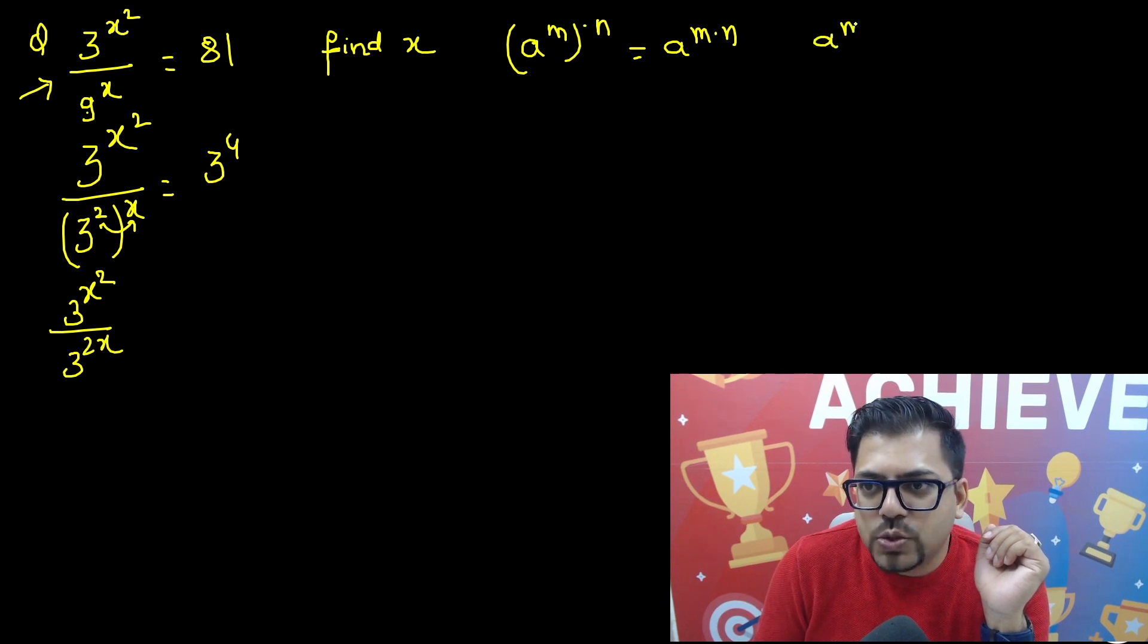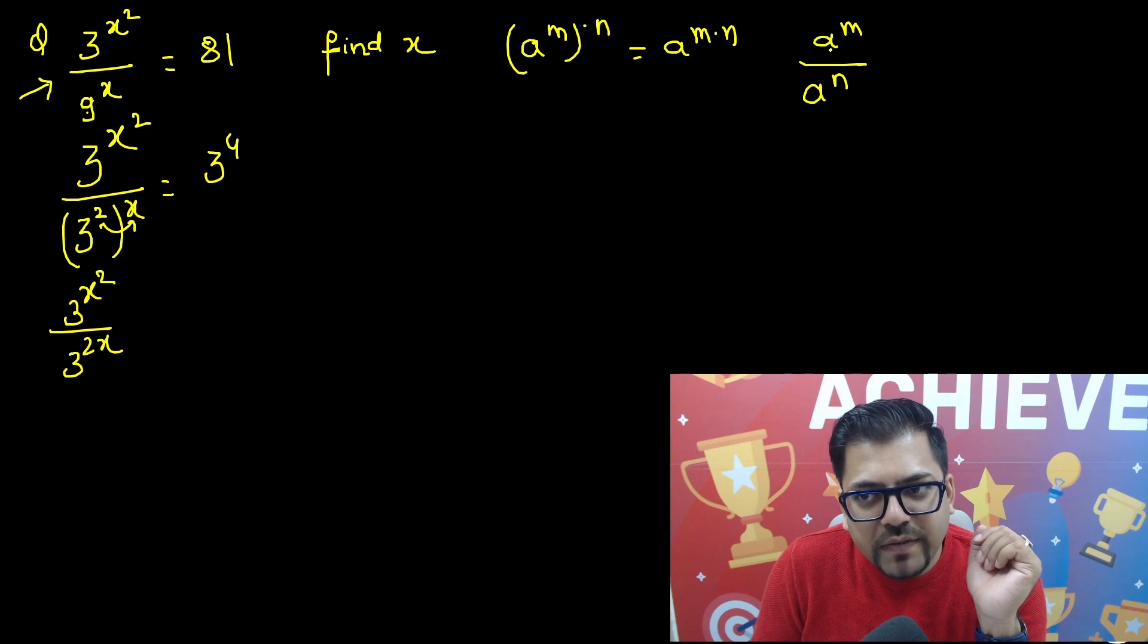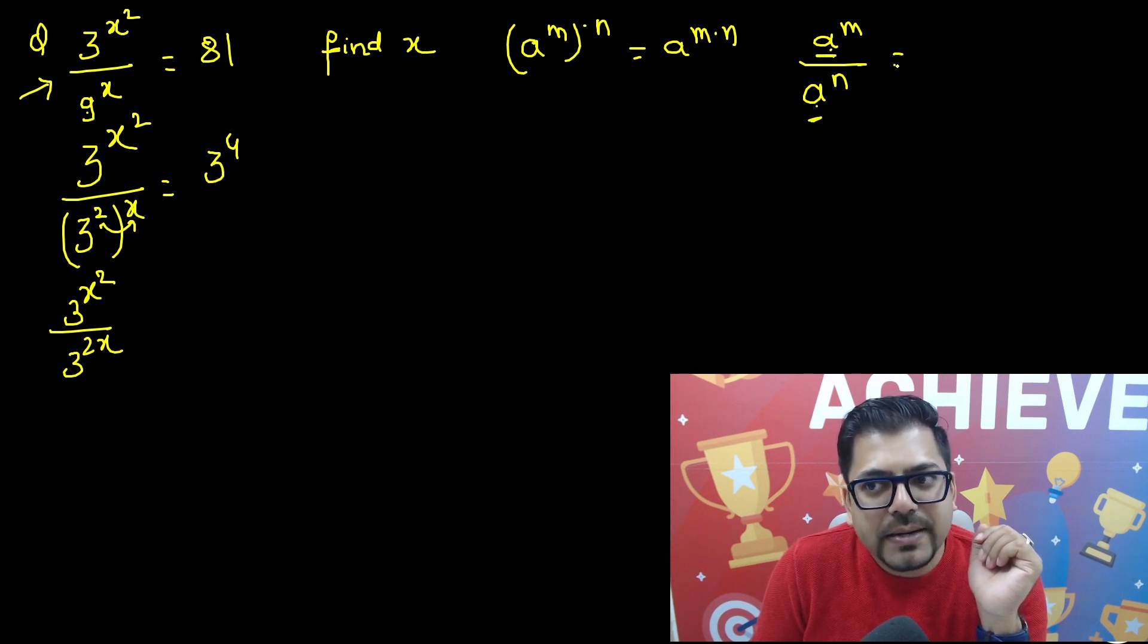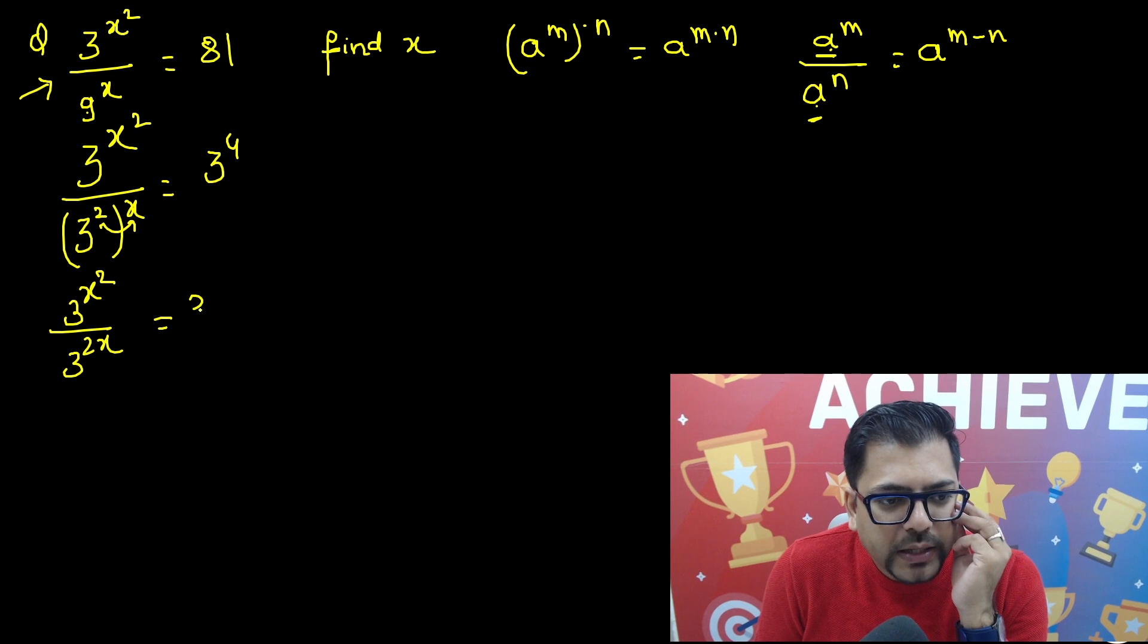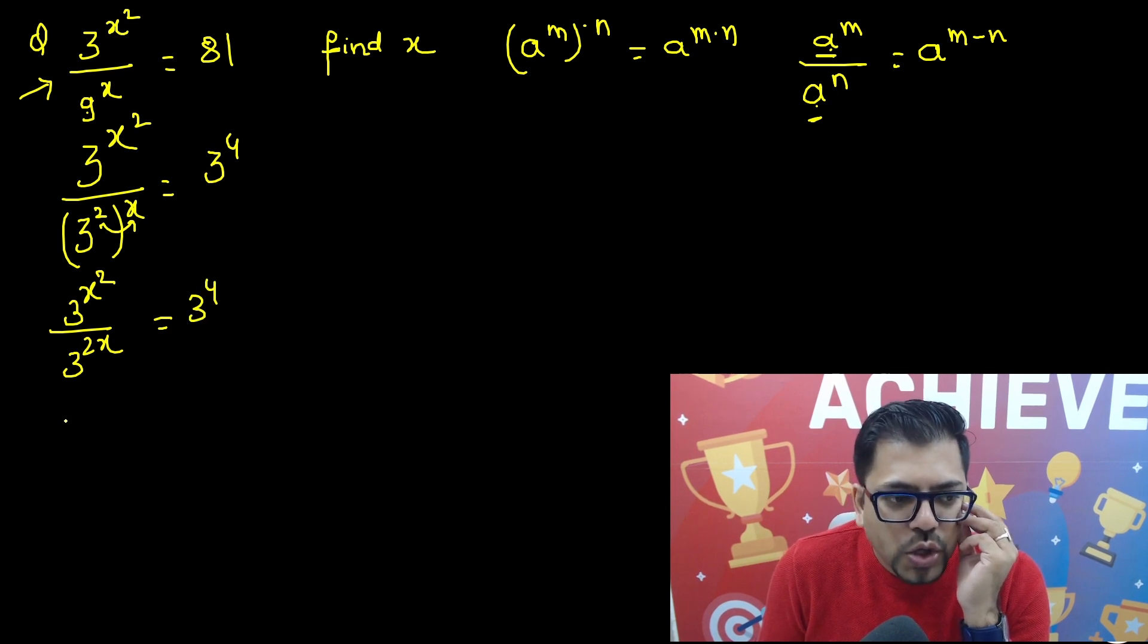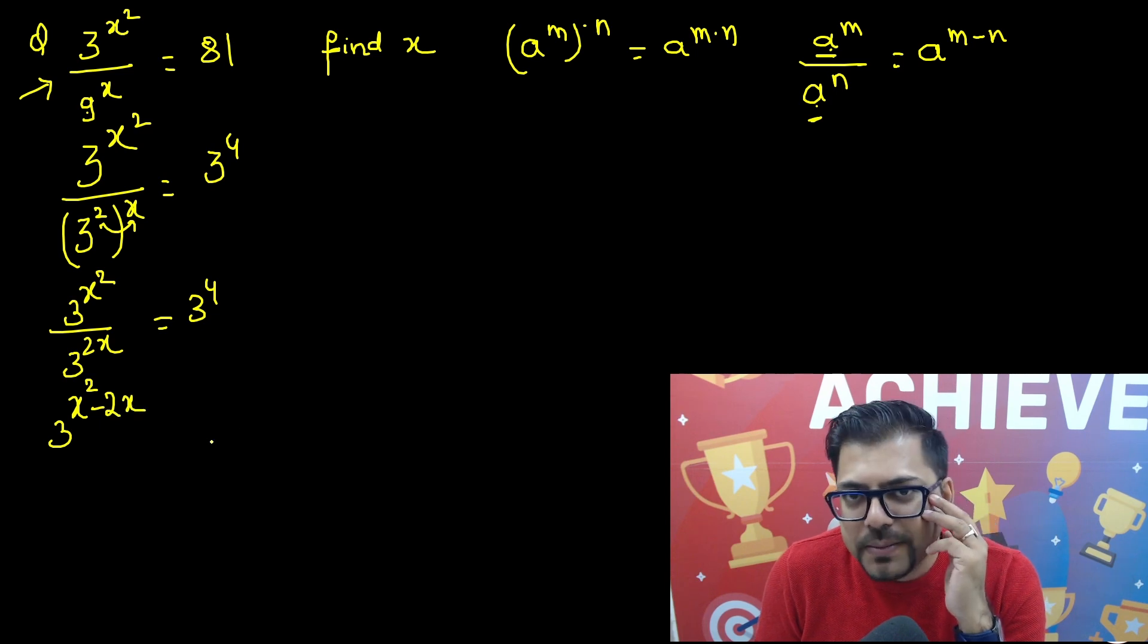Now you know the formula a raised to power m upon a raised to power n. So whenever you have the same numbers, the same base in the division, their power gets subtracted. So this will become a raised to power m minus n. Right hand side is 3 raised to power 4.